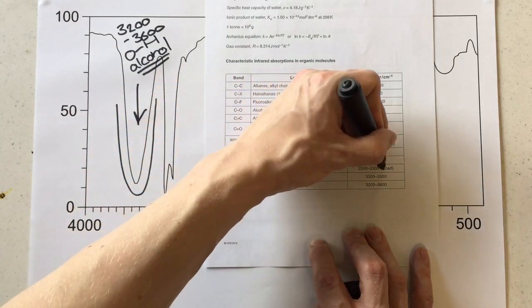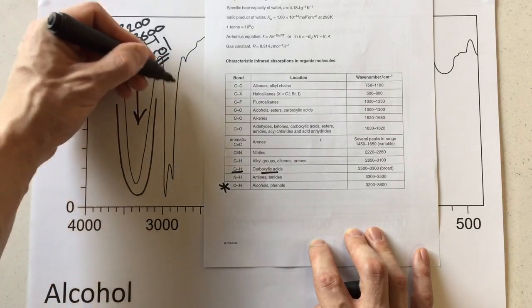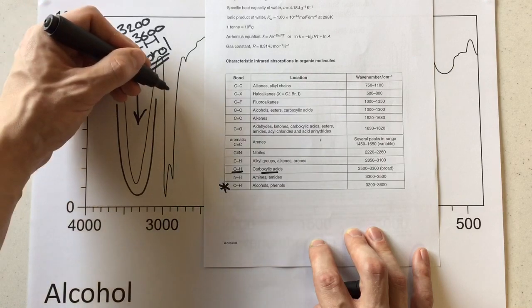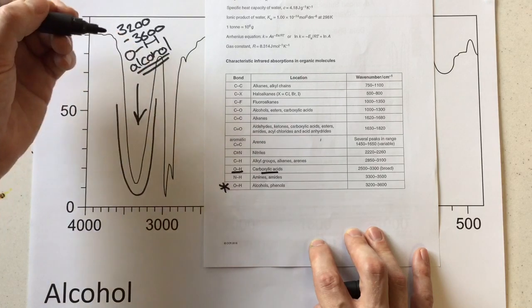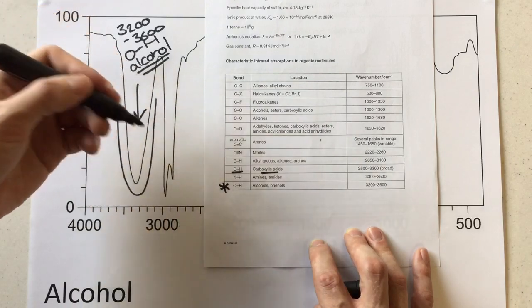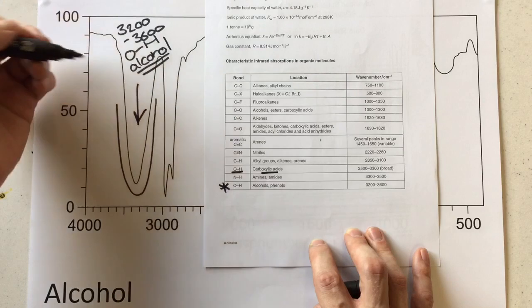You'll notice though that that peak for the OH carboxylic acid would actually be more this way and it would end up overlapping a lot more with this peak. Not to say that these alcohol peaks don't ever overlap with this peak to the right—sometimes they do—but the OH of a carboxylic acid is incredibly more likely to overlap and just give one big broad peak in this region.